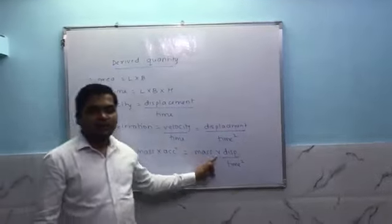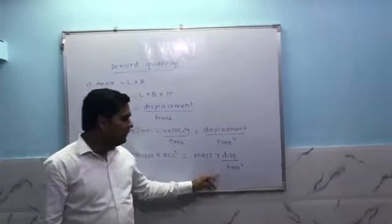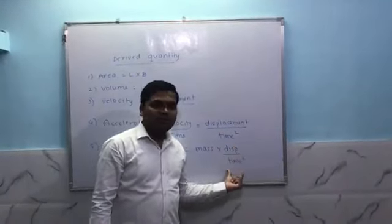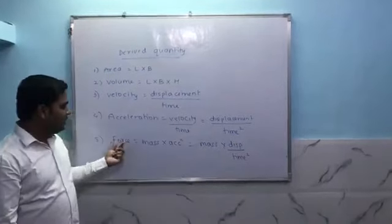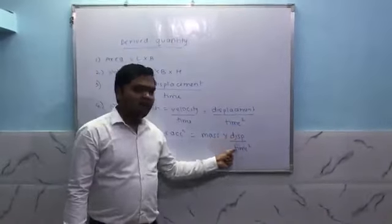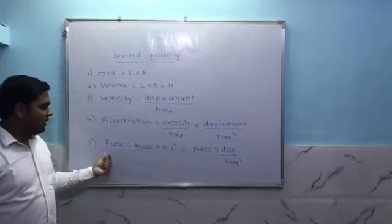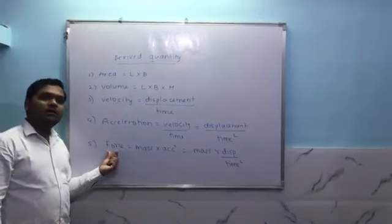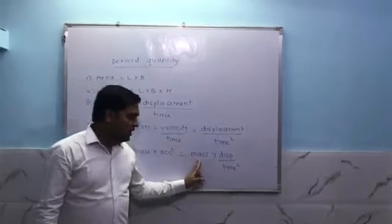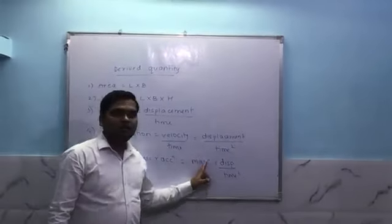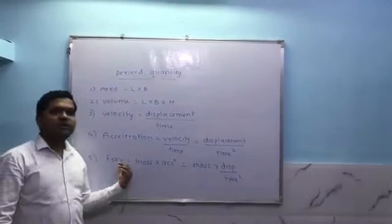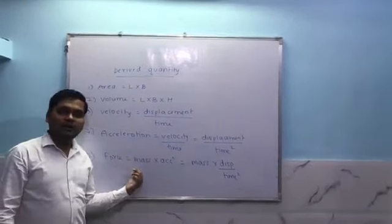Mass is a fundamental quantity, displacement is a fundamental quantity, time is also a fundamental quantity. So a quantity which depends on fundamental quantities for its measurement is called a derived quantity. For force — if you measure it, you need to know mass, displacement, and time. That's why force is called a derived quantity.